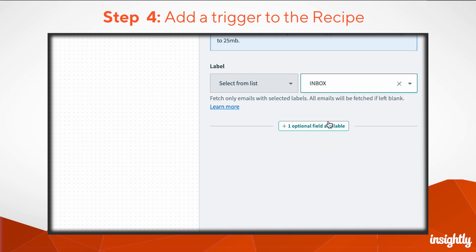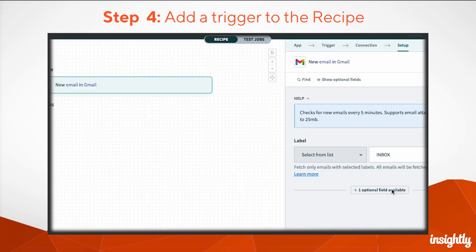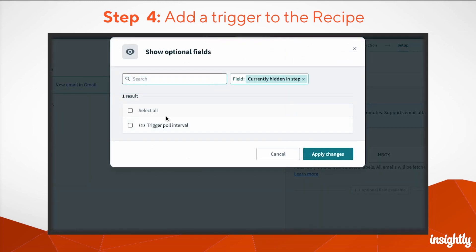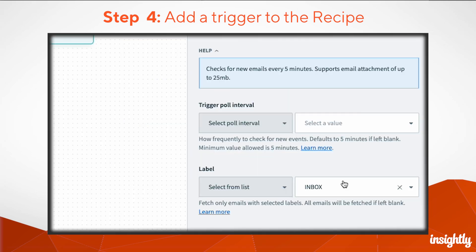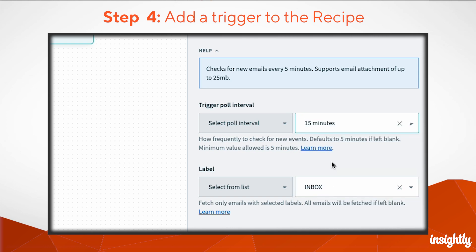If your recipe is a hero ready to embark on an epic adventure, then the trigger is that hero's call to action. You can choose to have your recipe trigger on a regular schedule, whenever an API is called, or whenever new activity happens on a third-party app.